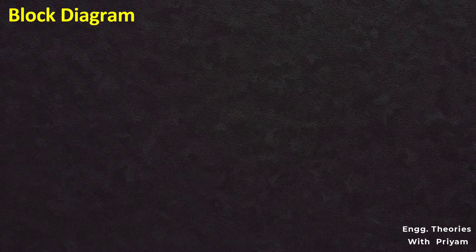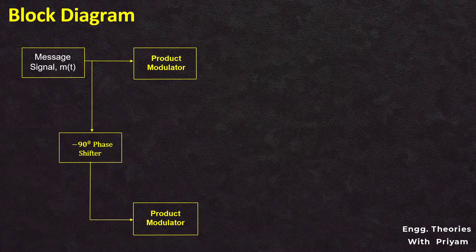The block diagram consists of two product modulators, two 90-degree phase shifters, one local oscillator, and one summer block. The two product modulators are supplied with input message signals that are 90 degrees out of phase from each other: the incoming message signal m(t) = AM·cos(2π·fM·t), and a 90-degree phase-shifted version — the Hilbert transform of m(t) — which equals AM·sin(2π·fM·t).